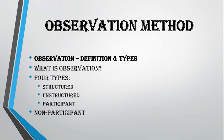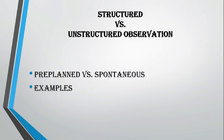In contrast, unstructured observation does not follow any fixed plan. The researcher does not decide in advance what to observe or how to go about it. Instead, observations are made spontaneously and flexibly based on what the researcher finds relevant at the moment. This type allows for more natural and in-depth insight, but may lack uniformity.